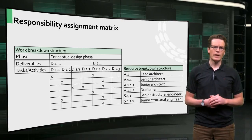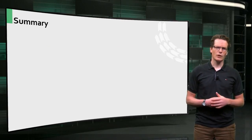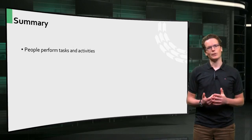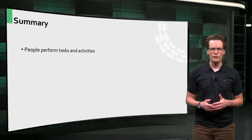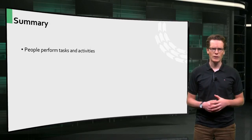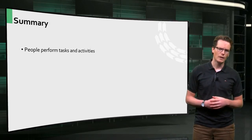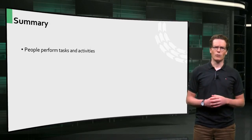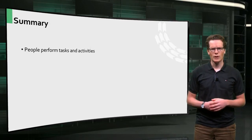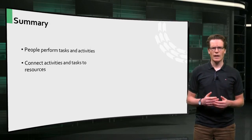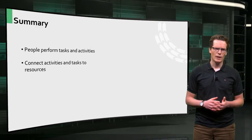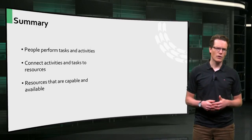This brings me to the end of this presentation. I started by telling you that a building does not build itself. There are people that have to perform the tasks and activities in order to deliver a building. After you defined the scope of work by using a work breakdown structure, you need to connect the tasks and activities to resources. These resources should be capable of performing these tasks and should be available when you need them.